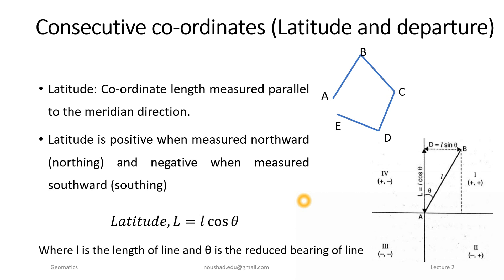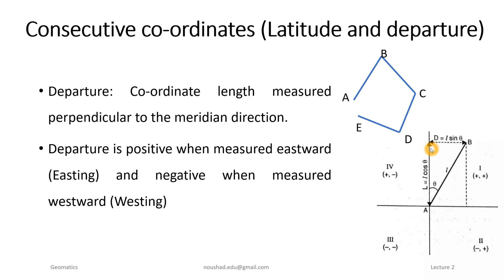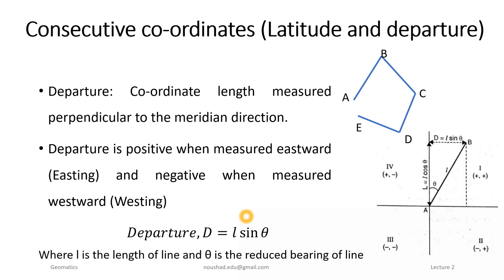Similarly, departure is the coordinate length measured perpendicular to the meridian. It is positive towards the east and negative towards the west. Departure = L sin θ, where small L is the length and θ is the reduced bearing.